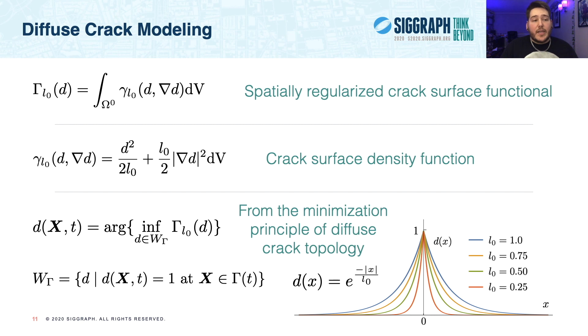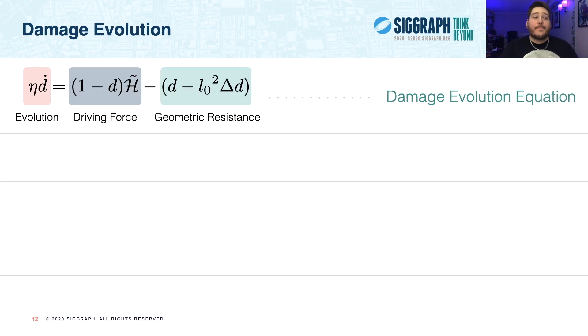And to give you some more intuition about this, we show at right the exponential function that is the solution to this minimization problem for various settings of L0. And as you can see, decreasing L0 decreases the spread of the diffuse crack representation. In NPM, we choose to keep L0 at a consistent setting of half the simulation grid resolution to ensure that the diffuse crack does not spread further than one grid cell. Now let's explore how we evolve damage over time.